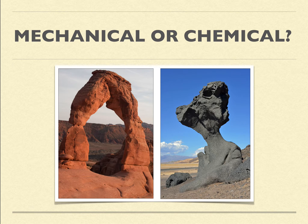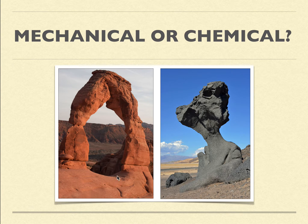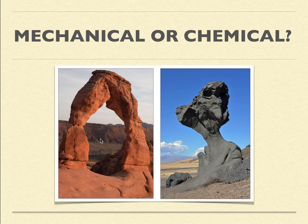This archway over in Arches National Monument is a mixture of mechanical and chemical. We can see it's red, so there must have been some oxides that have rusted. But this hole that's been carved in between is definitely part of a process of mechanical erosion.